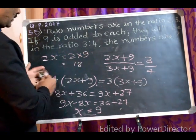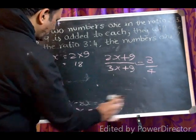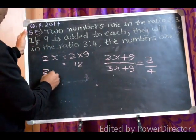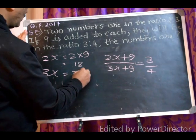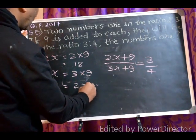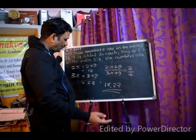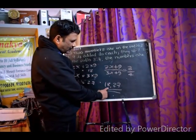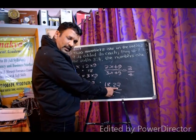So, our other number is 3x. That is equal to 3 into 9 is equal to 27. So, the two numbers are 18 and 27. Okay. Thank you.